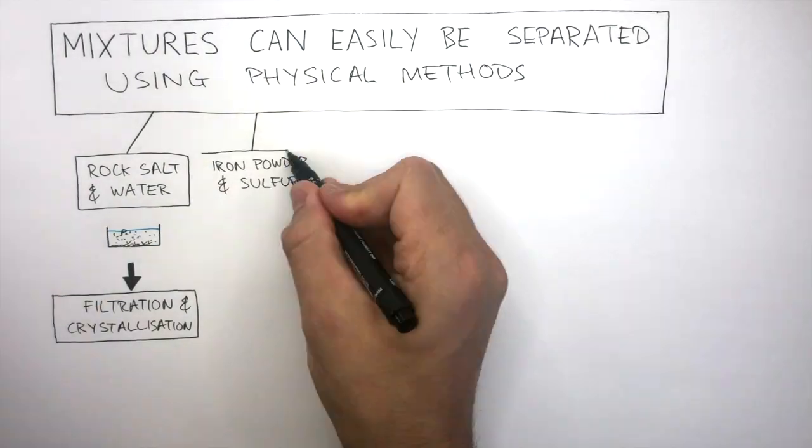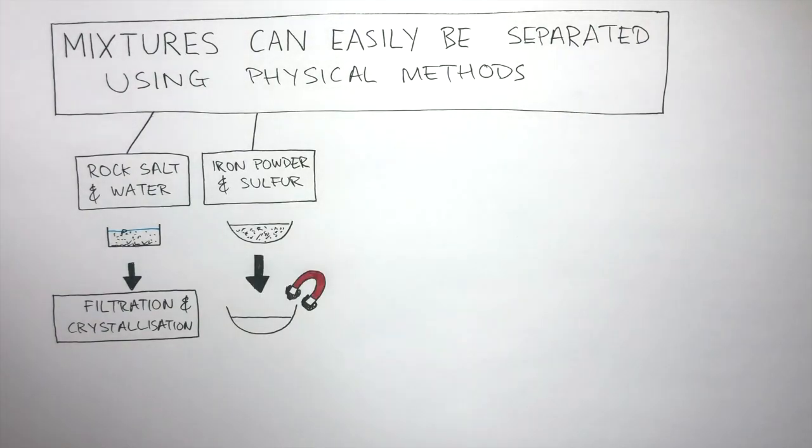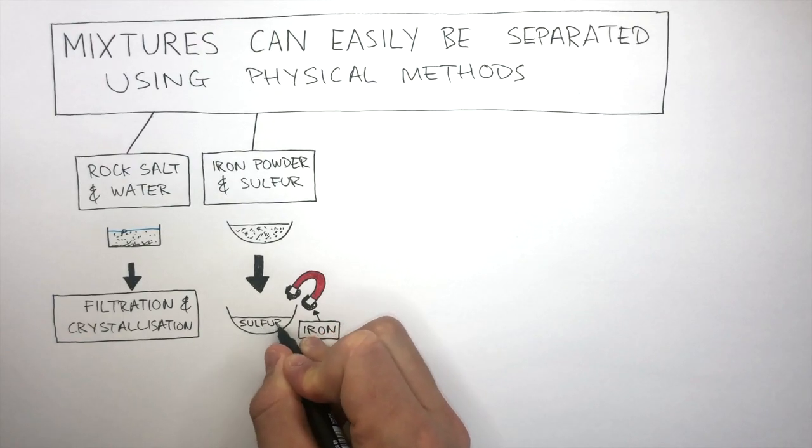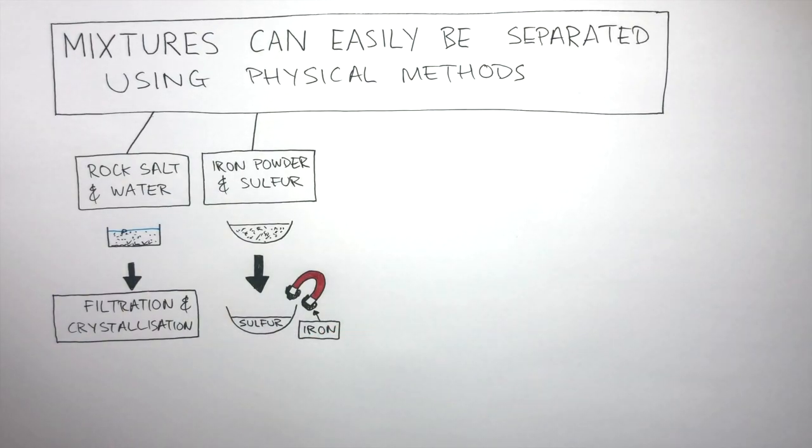Iron powder and sulfur can be separated by using a magnet. The magnet attracts the iron, leaving the sulfur behind, separating the mixture. The magnet can be used in this situation because iron is one of three magnetic metals.